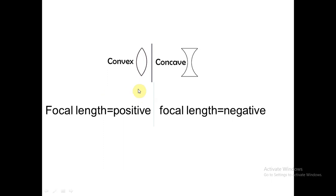This is very very important. In the case of a convex lens, the focal length is always taken as positive. For a concave lens, the focal length is always taken as negative. Convex lens: positive focal length; concave lens: negative focal length. Do not forget this - it will be very useful in numericals.